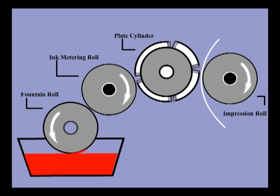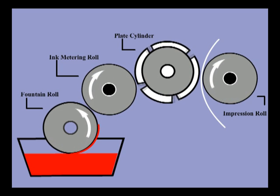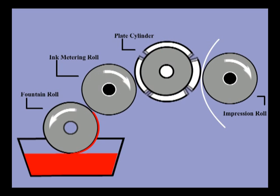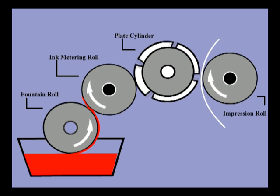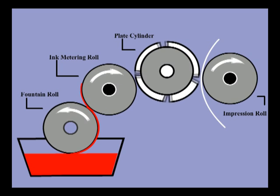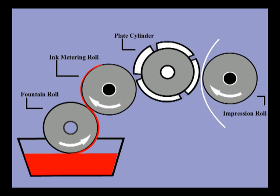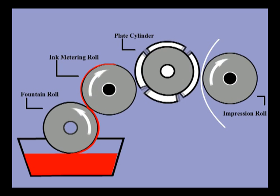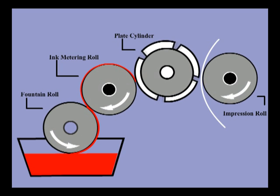The purpose of the fountain roll is to pick up a heavy flow of thin ink from the ink pan or fountain and deliver it to the metering roll. The fountain roll and metering roll are set to rotate under pressure against each other. The fountain roll is driven slower than the metering roll, causing it to squeeze away excess ink from the surface of the metering roll.